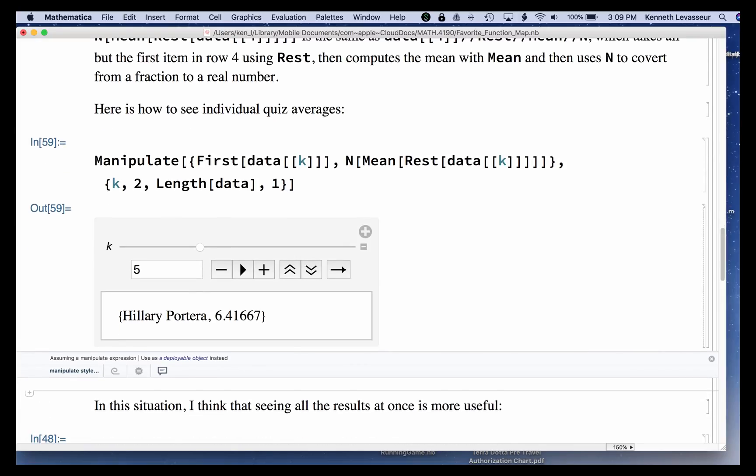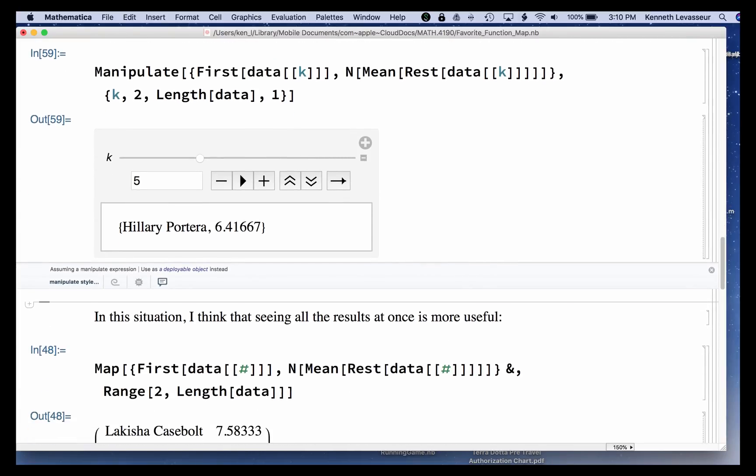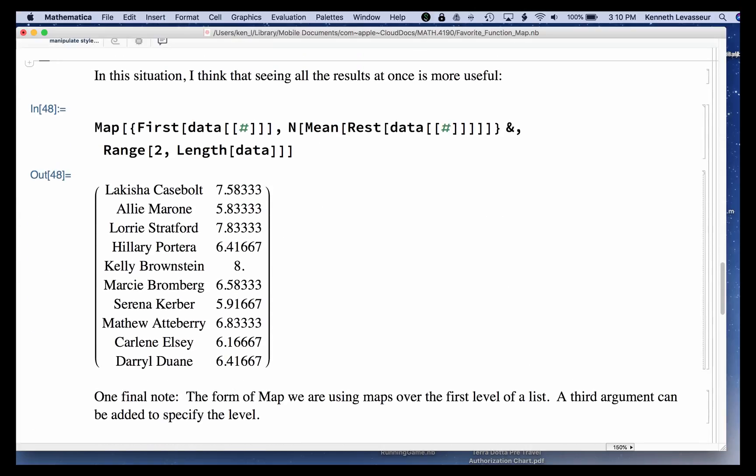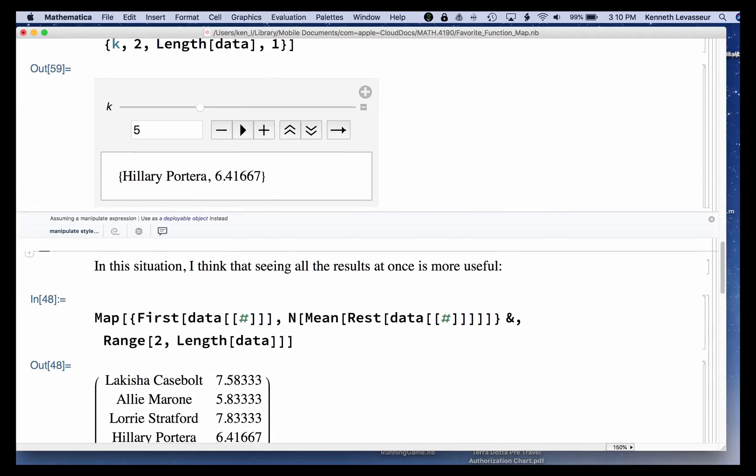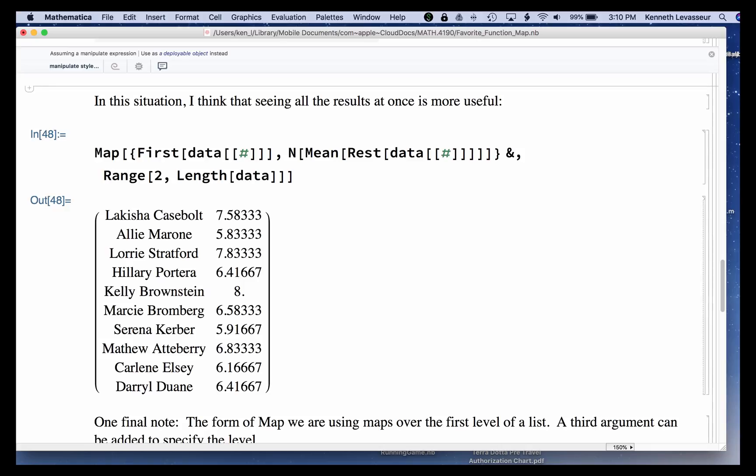So just manipulate, but we can do a similar thing as we did before, and use Map and get the whole thing. Again, compare it. Let me just compare the two expressions where Manipulate has this list with a variable k. We replace the k with a hash mark in both cases, and an ampersand at the end. Again, that's a pure function. You map it over, it's the same idea. Instead of a controller, it's a list of numbers from two through the length of data. And there's the result. So you can see all the grades at once.